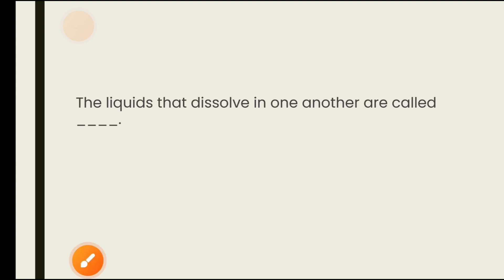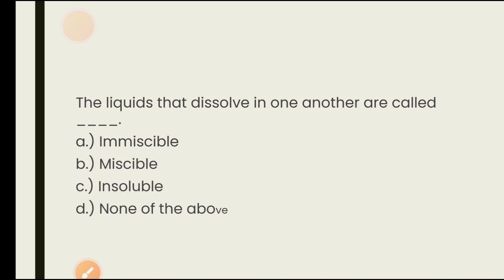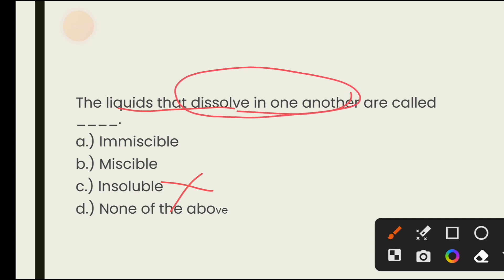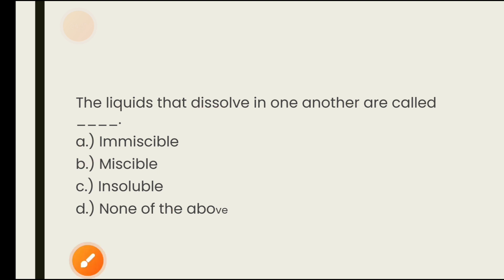The liquids that dissolve in one another — what is that called? Options are immiscible, miscible, insoluble, none of the above. Read this question carefully — many will quickly click insoluble, but that is wrong. Liquids that mutually dissolve in each other are called miscible. Liquids that do not dissolve in each other are called immiscible. The answer is miscible.